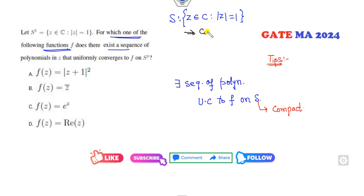Then there exists a sequence of polynomials which converges uniformly only if F is an entire function. Whenever you have a sequence of polynomials which converges uniformly on a compact set, only if F is your entire function.